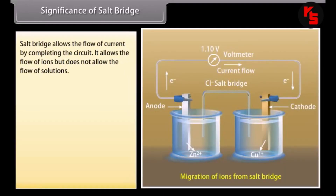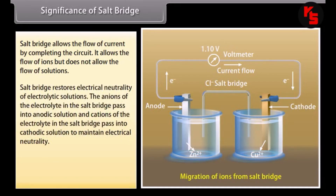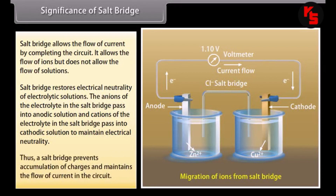Significance of salt bridge. The salt bridge allows the flow of current by completing the circuit. It allows the flow of ions but does not allow the flow of solutions. The salt bridge restores electrical neutrality of electrolytic solutions: the anions of the electrolyte in the salt bridge pass into the anodic solution, and the cations of the electrolyte pass into the cathodic solution to maintain electrical neutrality. Thus, the salt bridge prevents accumulation of charges and maintains the flow of current in the circuit.